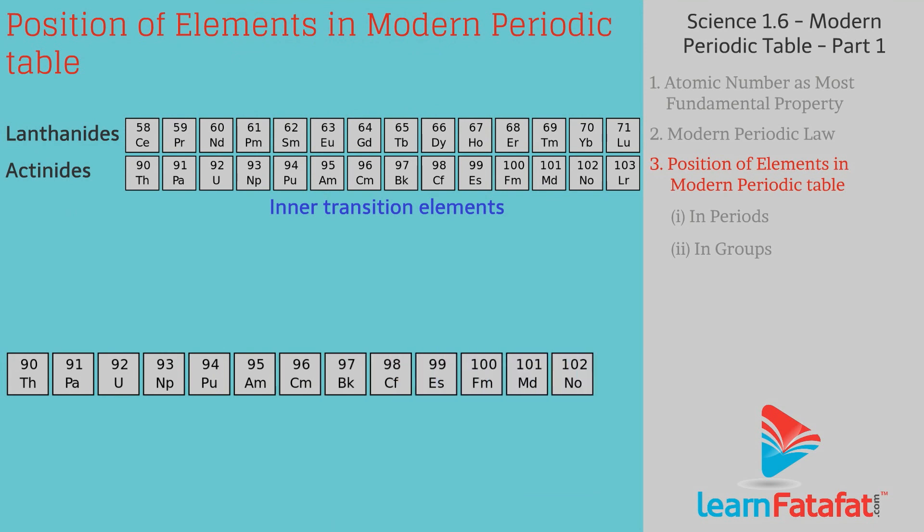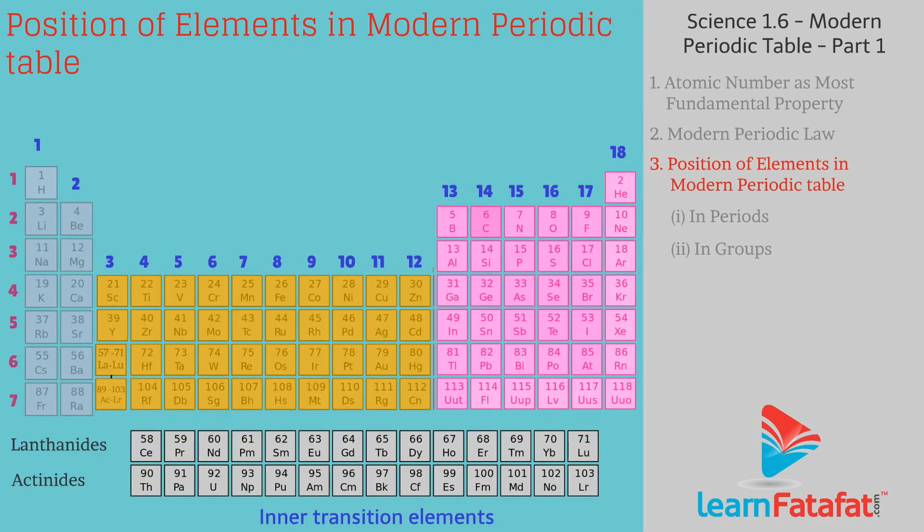Elements with atomic number between 90 to 103 are called as actinides. Actinides series starts with actinium, which is placed in group 3, period 7, since its properties are closely related to group 3 elements.